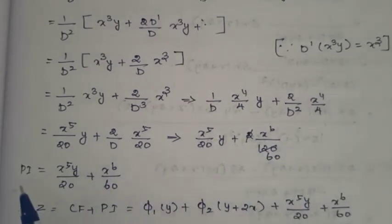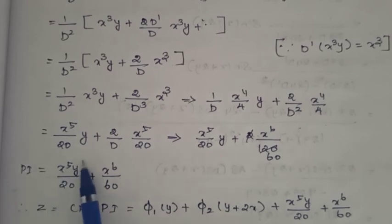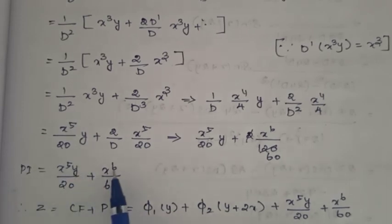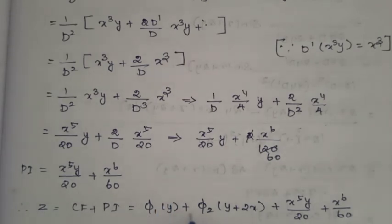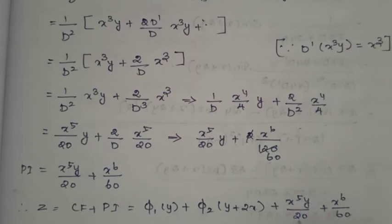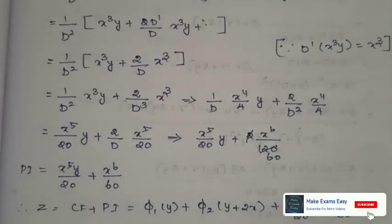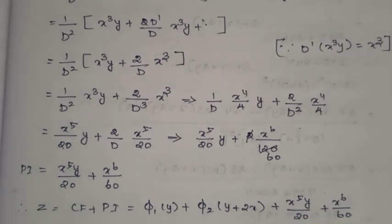Particular integral is equal to x power 5 y divided by 20 plus x power 6 divided by 60. Therefore, z equals complementary function plus particular integral: z = φ₁(y) + φ₂(y + 2x) + x⁵y/20 + x⁶/60. Thank you very much.